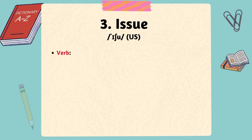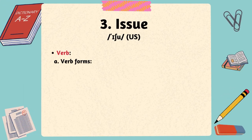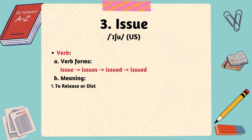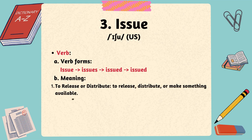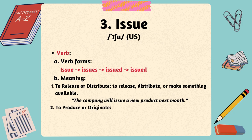When used as a verb, issue can mean to release, distribute, or make something available. The company will issue a new product next month. When used in a more formal or literary context, issue can mean to arise, result, or originate. The conflict can issue from misunderstandings.